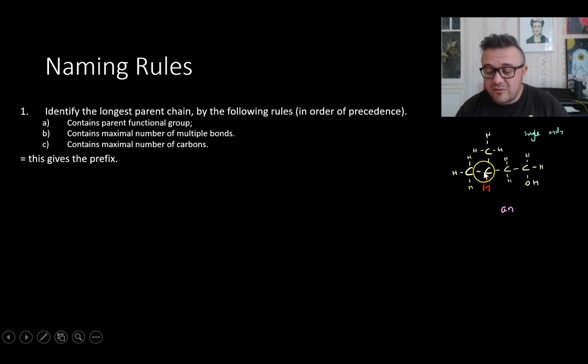And we can see that we actually have a choice to make here on what the chain is. One, two, three, four, or one, two, three, four. It could go either way. Just for simplicity, we're going to go along the baseline here. One, two, three, four. That gives us the prefix, which in this case is but. So it's butan something.